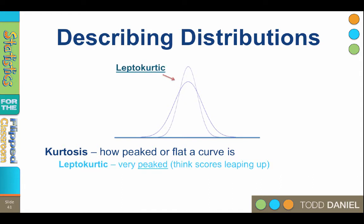When the scores are very close together, the curve becomes peaked. We call this a leptokurtic curve — think of the scores leaping up, leptokurtic. When the scores are very spread out, the curve becomes flat like a plate. We call this platokurtic. Plato rhymes with flat. Platokurtic is a flattened curve in the shape of a plate.